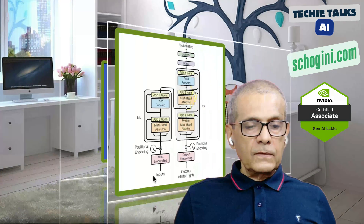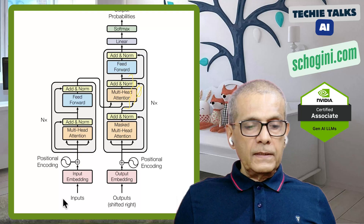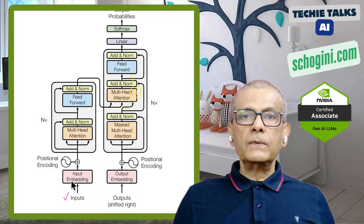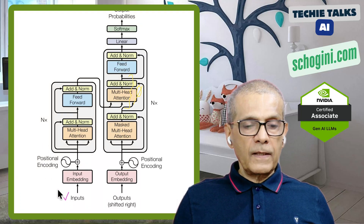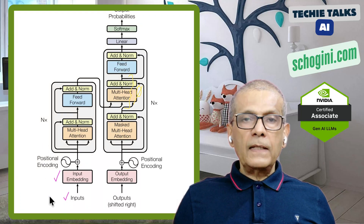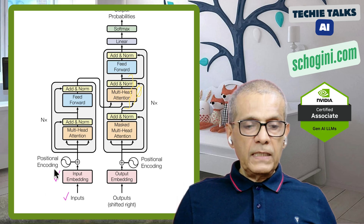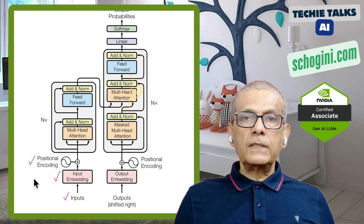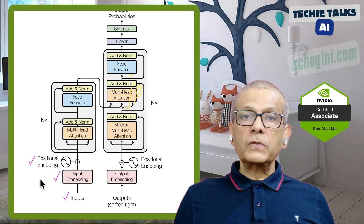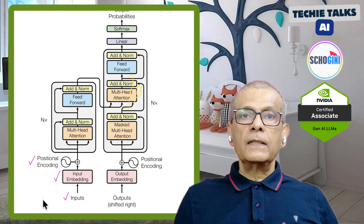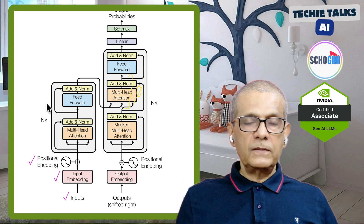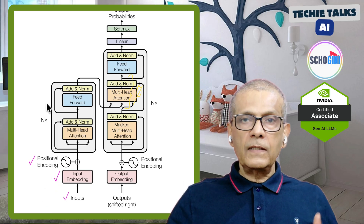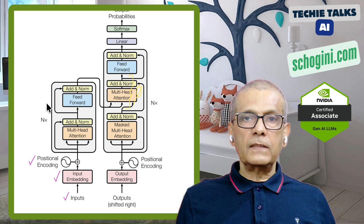So we covered input getting converted to tokens, then adding embeddings for semantic meaning, and in this video we talked about positional encoding — adding the order. We are all set to enter the attention part of transformer architecture. See you in the next video.